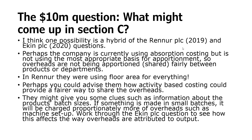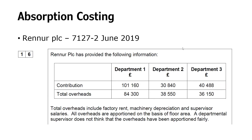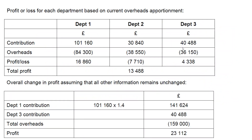Work through the Ekin question to see how that affects the way overheads are attributed to output. In the Renner question, they gave us information on three departments — or it could just as easily be different product lines — with contribution and overheads. We weren't asked to reapportion the overheads, but when we looked at the figures, the profit or loss for each department using those allocated overheads meant Department 2 was incurring a loss. The way these overheads have been shared out could be partially responsible for that loss. If we used activity-based costing or just apportioned overheads on a fairer basis rather than all on floor area, it could give a very different result.